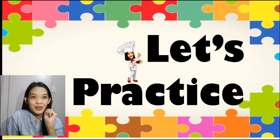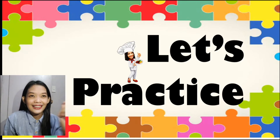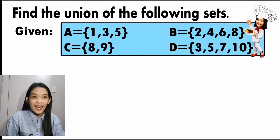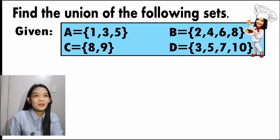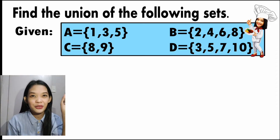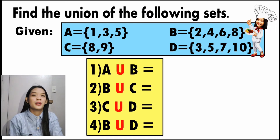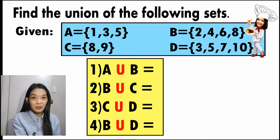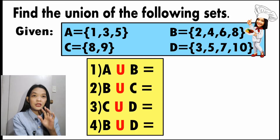You can pause the video and try to answer this. Let's practice. Find the union of the following sets, given that set A has elements 1, 3, 5; set B has elements 2, 4, 6, 8; set C has elements 8 and 9; and set D has elements 3, 5, 7, and 10. You are going to answer: number 1 — A union B; number 2 — B union C; number 3 — C union D; and number 4 — B union D. Remember, you just need to combine the elements, and if there are similar elements, you will write them as one.